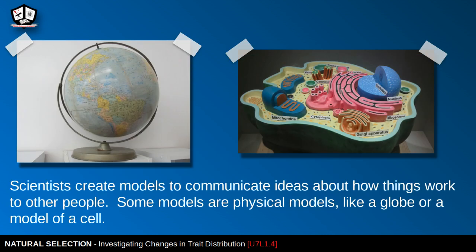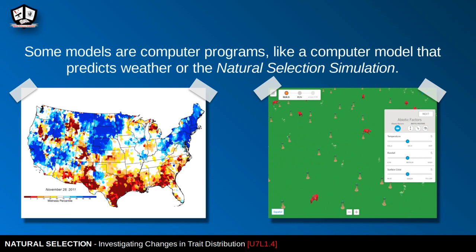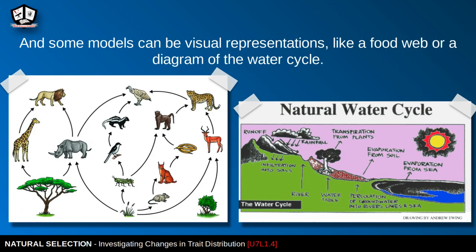Scientists create models to communicate ideas about how things work. Some models are physical models, like a globe or a model of a cell. Other models are computer program models, like ones that predict the weather or the natural selection simulation used in this unit. We can also have diagrams as models, like a diagram of a food web or the water cycle.